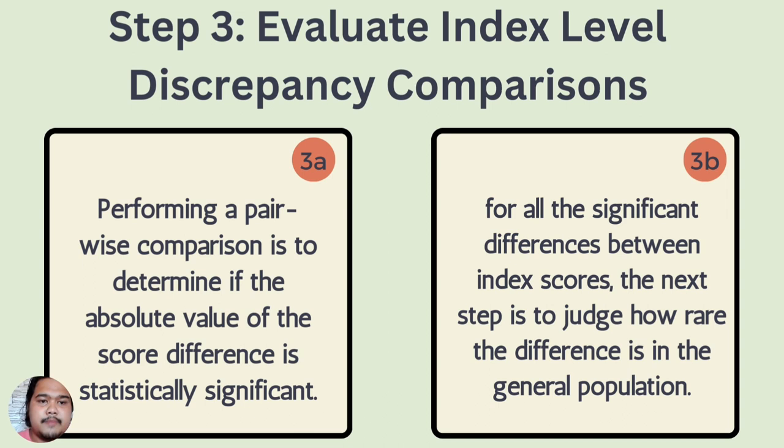Step 3: Evaluate index-level discrepancy comparisons. Step 3a involves performing pairwise comparisons to determine if the absolute value of the score difference is statistically significant. Step 3b: For all significant differences between index scores, judge how rare the difference is in the general population.